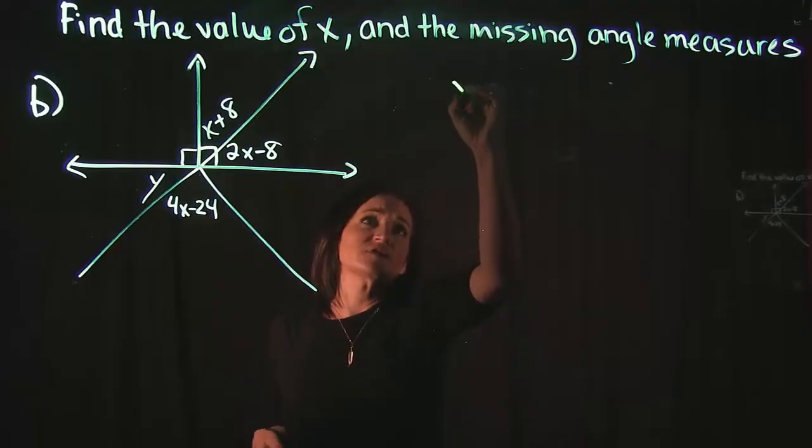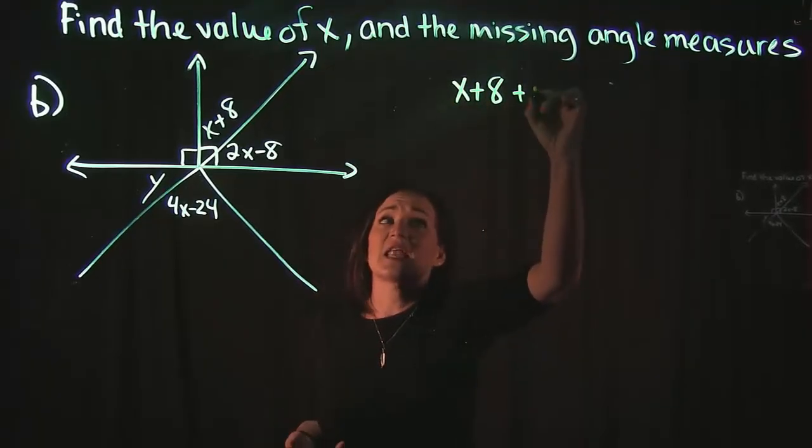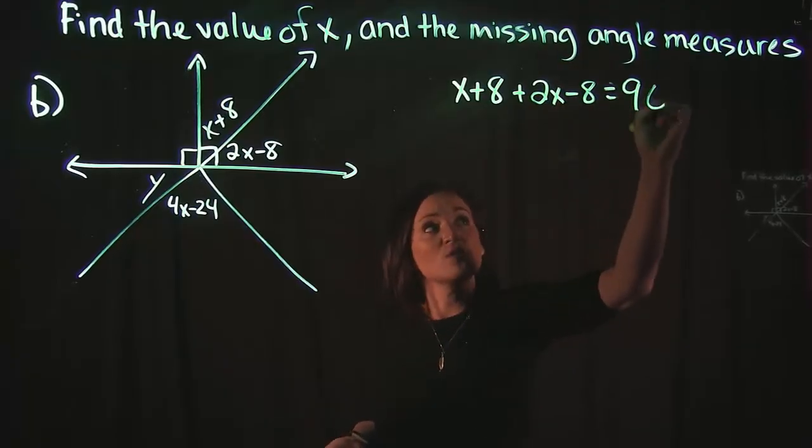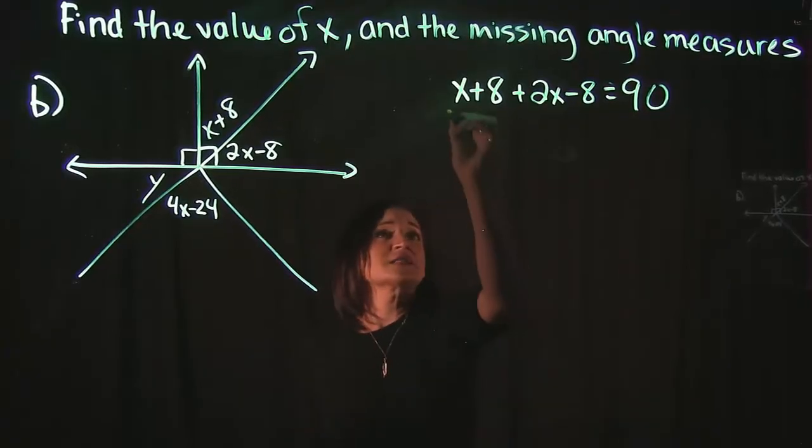So what I can do is I can take the first angle, which is x plus 8, add it to the second angle, which is 2x minus 8, set that equal to 90 degrees, and solve for x. When we solve for x, the first thing we need to do is combine like terms.